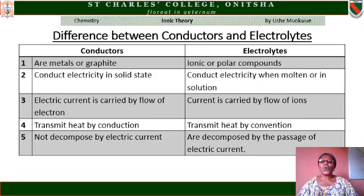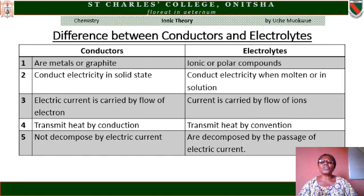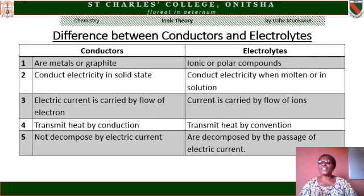My dear students, with these few definitions, I would like us now to differentiate between conductors and electrolytes. A conductor is a metal or graphite. Electrolytes are ionic or polar compounds — compounds that have two ends, one end positive and the other end negative. Conductors conduct electricity in solid state. Electrolytes conduct electricity when in molten state or in solution. In conductors, electric current is carried by flow of electrons. In electrolytes, current is carried by flow of ions. Conductors transmit by conduction. Electrolytes transmit by convection. Conductors are not decomposed by electric currents. Electrolytes are decomposed by the passage of electric current.